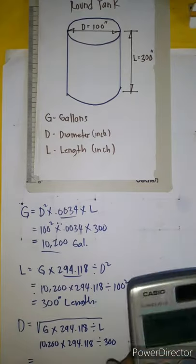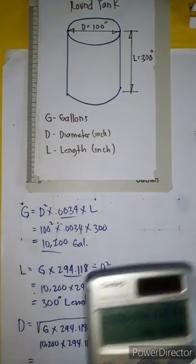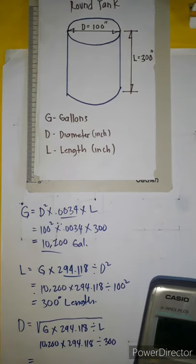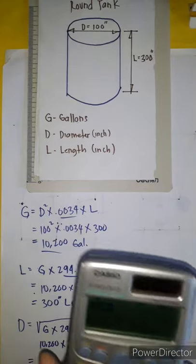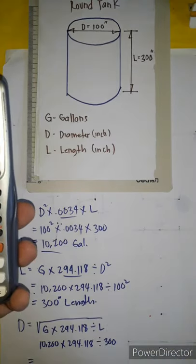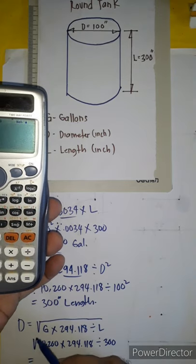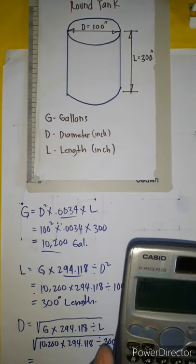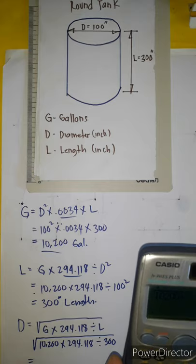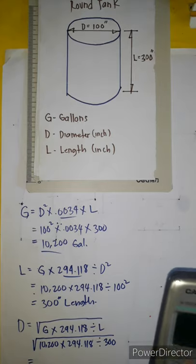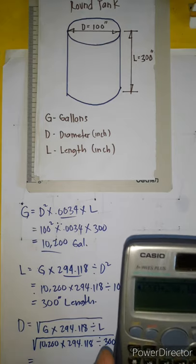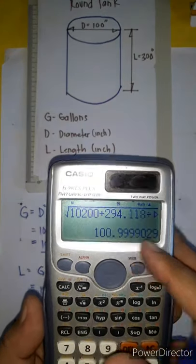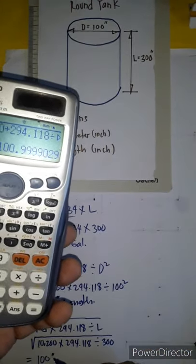Let's find out the answer. So: square root of 10,200 times 294.118, divided by 300. The answer is 100 inches — that is exactly the diameter.